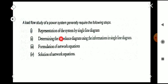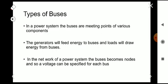The first step is representation of the system by a single line diagram. The second one is determining the impedance diagram using the information in the single line diagram. The third one is the formulation of network equations, and the fourth one is the solution of the network equations. So four steps are there for a load flow study.